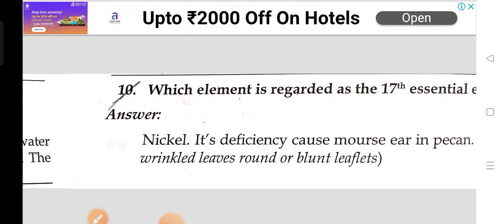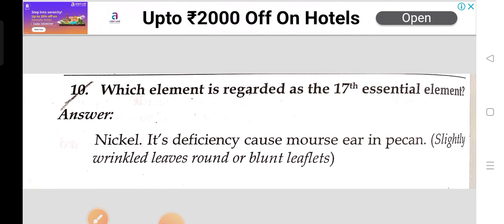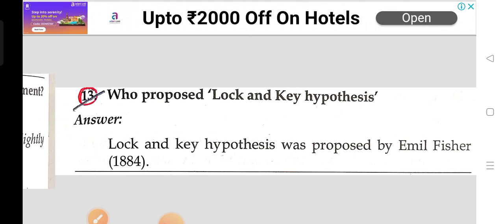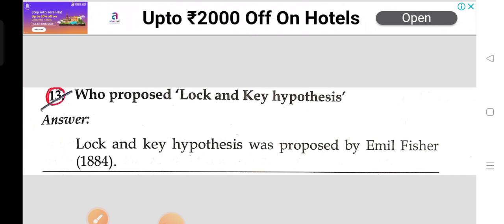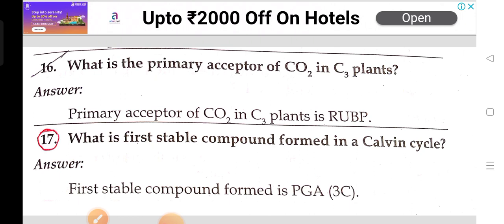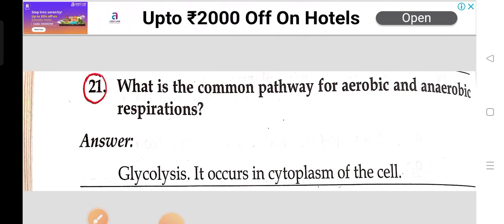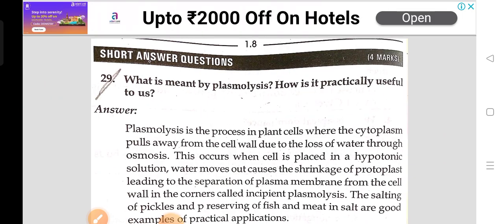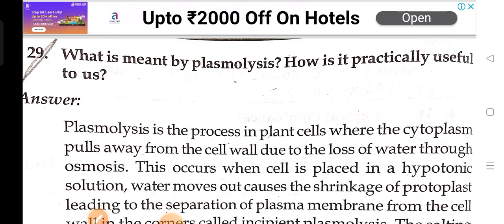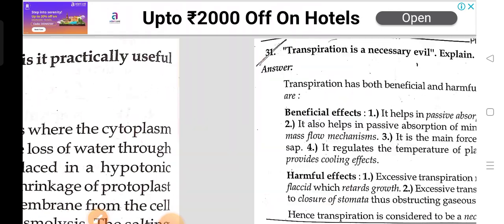Define water potential. Which element is regarded as the 17th essential element? Who proposed lock and key hypothesis? What is a primer? Acceptor abundant external C3 plants? What is the first stable compound formed in a Calvin cycle? What is the common pathway for the aerobic and anaerobic respirations? What is meant by plasmolysis? How is it practically useful to us?